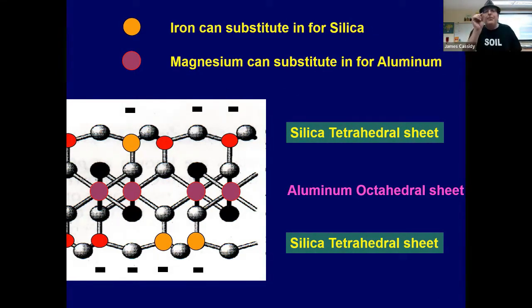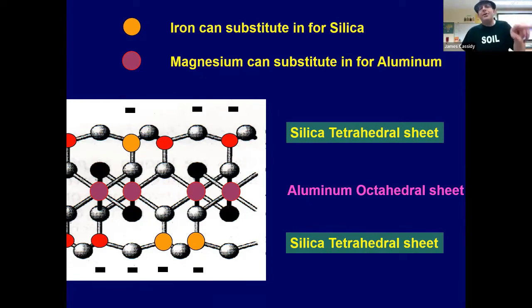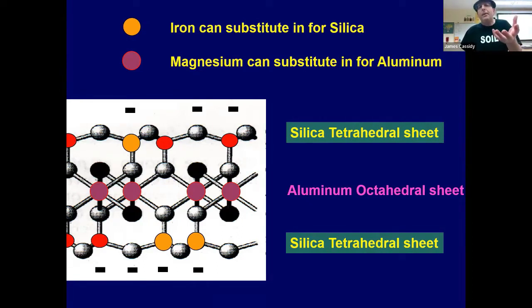When you look at the clay, you find out what the cation exchange capacity of that soil is. That is the number of negative charges per kilogram of dry soil — that is the cation exchange capacity.